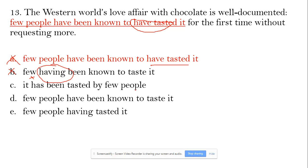Option C: 'it has been tested by few people for the first time without requesting more.' This is not incorrect in structure, but because the word is 'requesting more,' people should be the subject rather than chocolate — because chocolate requesting more is not possible.